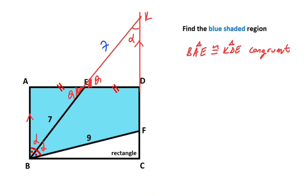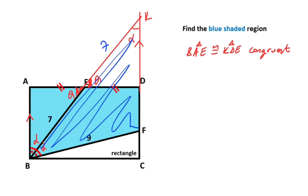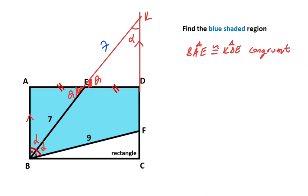Since BAE and KDE are congruent, and if BA is seven units, then this length must also equal seven units. After that, if you focus on this triangle, it has the same base angles, which means this triangle is an isosceles triangle. If you notice, the base is divided into two equal parts.